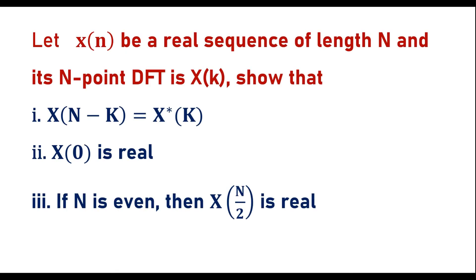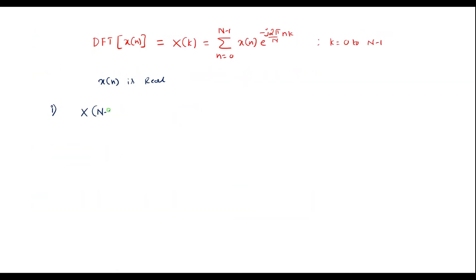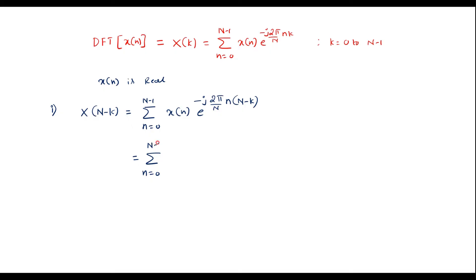Let me take the first one, that is X of N minus k. I can represent it as summation n equals 0 to N minus 1 of x of n times e to the power minus j 2 pi by N into n, with k replaced by N minus k. This can be written as summation n equals 0 to N minus 1 of x of n times e to the power minus j 2 pi by N into n N, times e to the power plus j 2 pi by N into n k.